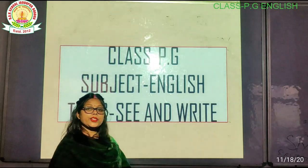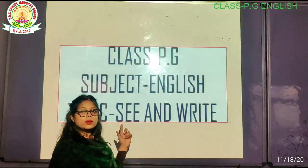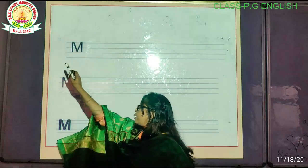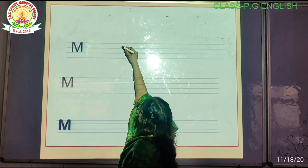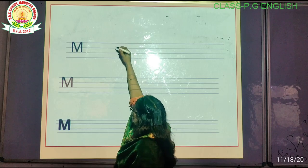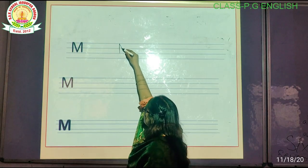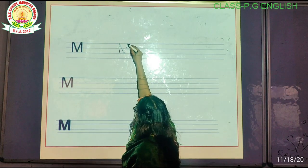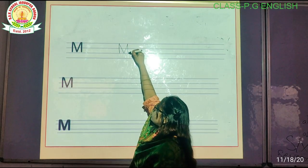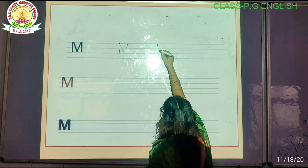देखें और लिखें — चलिए हम लोग प्रैक्टिस करते हैं। M — अभी हम लोग पूरे तरह से M को लिखना नहीं सीखे हैं, तो आज हम लोग फिर से प्रैक्टिस करते हैं। Capital M — हम लोग को Capital M लिखना है।